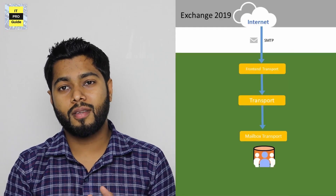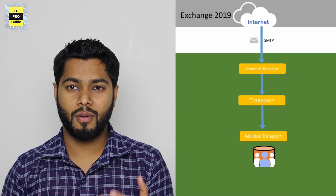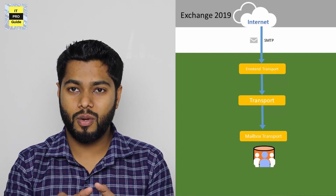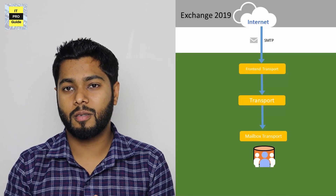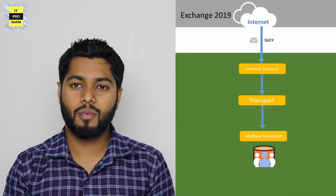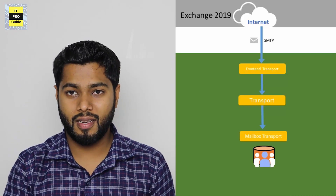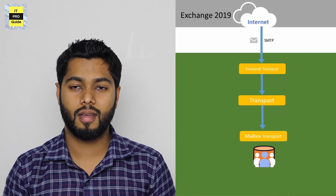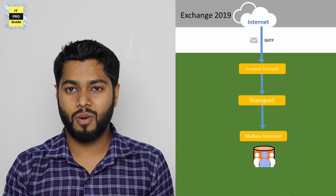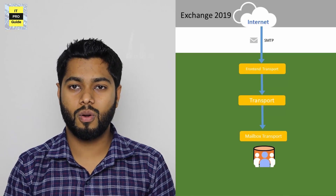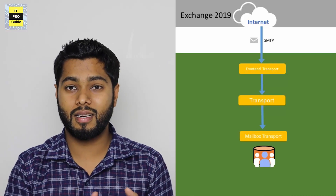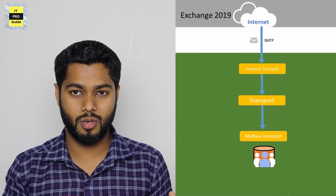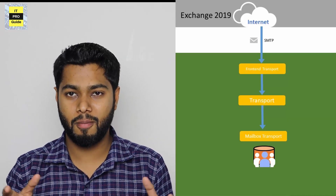Those who worked with previous Exchange Server versions like 2010 and 2013, there were multiple roles — either you install them in one server or in separate servers. But when it comes to 2016 and 2019, all this is clubbed into one role called the mailbox server role. Inside the mailbox server role, there are three separate services called frontend transport service and mailbox transport service, which are responsible for mail flow.